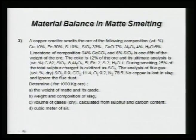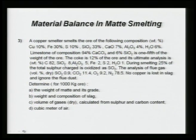The coke is 12 percent of the ore and its ultimate analysis is given — it contains carbon, SiO₂, Al₂O₃, iron, and so on. Importantly for smelting, 25 percent of the total sulfur charged is oxidized as SO₂, meaning 75 percent remains in the system as matte or whatever form.